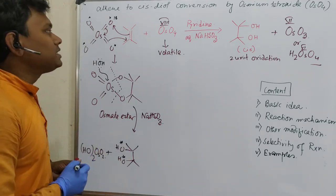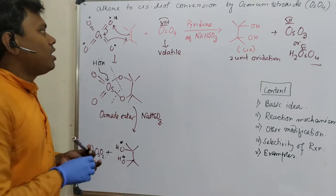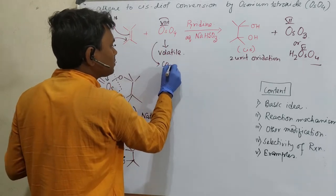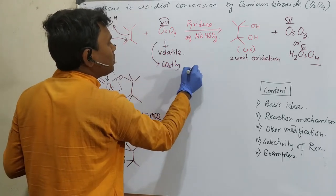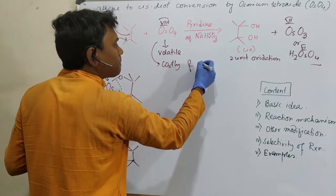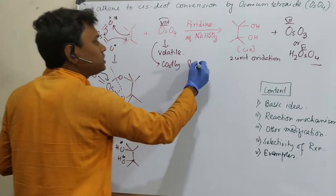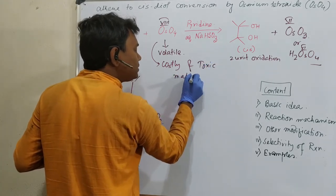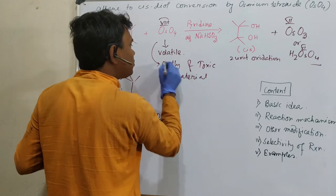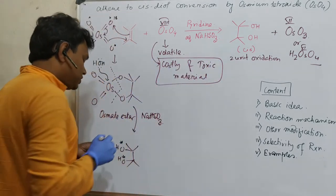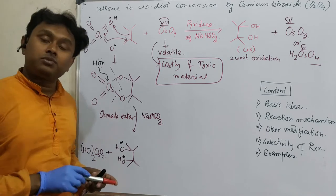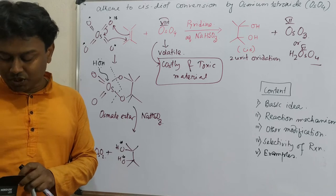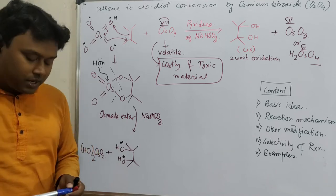Now whatever we have discussed, this is a stoichiometric reaction. But osmium tetroxide is costly and toxic. So what happens? If a material is costly as well as toxic, general tendency to use it as a stoichiometric reagent is not good. For that case what can we do? We can make this stoichiometric process into catalytic process.